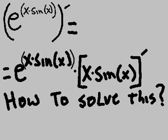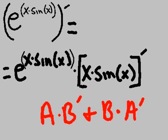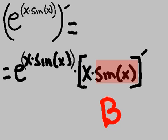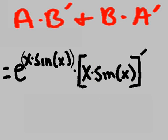Okay, but how do I solve this? I use the method a times b prime plus b times a prime. This is a, this is b. A times b prime plus b times a prime. Let's do it.